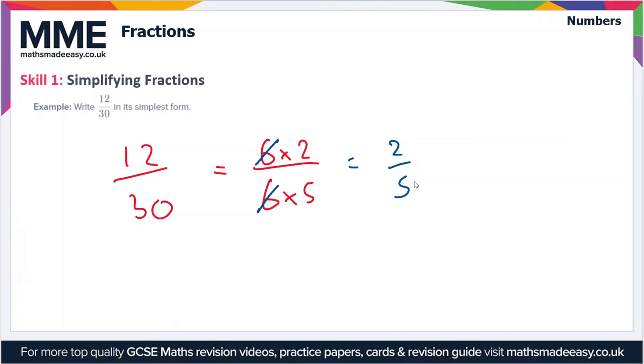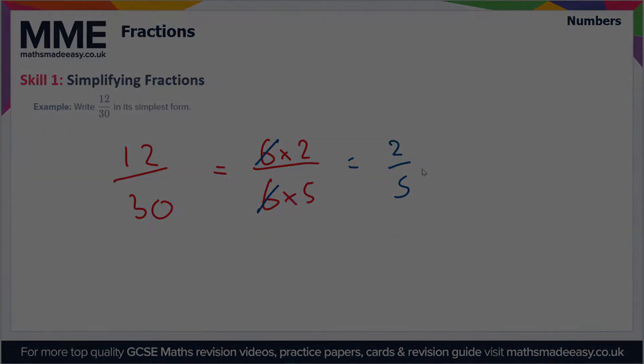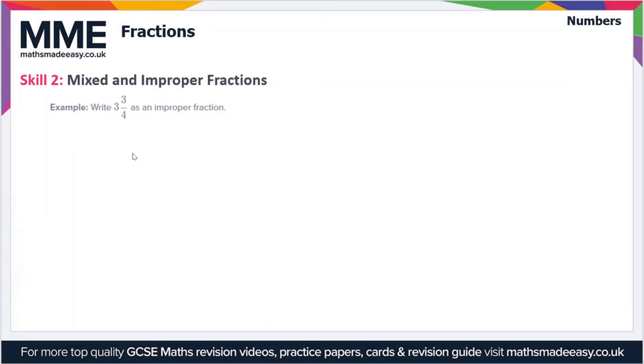The next skill that we'll have a look at is converting from a mixed fraction to an improper fraction. For example, we have to write 3 and 3/4 as an improper fraction. So 3 and 3/4 is equal to what?